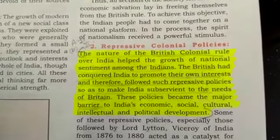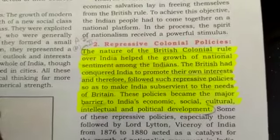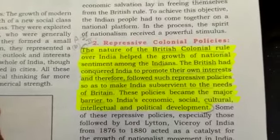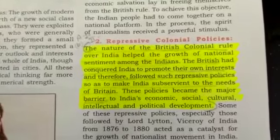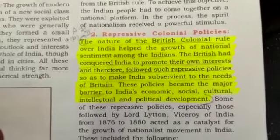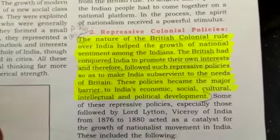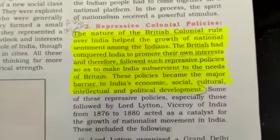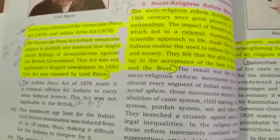Some repressive policies of the British led to the growth of the nationalism movement. You may remember from the previous lesson about the proclamation of Queen Victoria as the Empress of India. In 1877, a Grand Darbar was organized at Allahabad to proclaim Queen Victoria as Empress of India. At this very time, Bengal was facing a severe famine and the people of Bengal were dying of hunger and poverty. Still, the British government spent lakhs of rupees to celebrate this occasion.